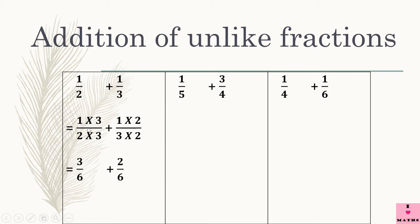3 ones are 3 and 2 threes are 6. 1 twos are 2 and 3 twos are 6. So 1 upon 2 and 3 upon 6 mean the same — they are equivalent fractions. Also 1 upon 3 and 2 upon 6 also mean the same because they are also equivalent fractions. So instead of adding these 2 unlike fractions, now we are going to add these 2 like fractions, and the result would be exactly the same as it would have been if we added the original fractions.